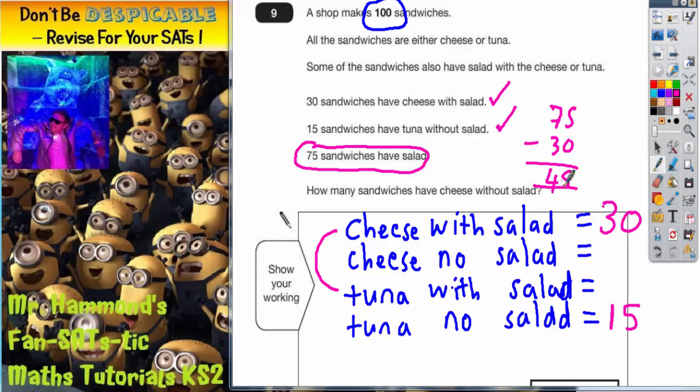So there must be another 45 sandwiches with salad. So tuna with salad needs to be 45 sandwiches, because 30 and 45 makes the 75 with salad.